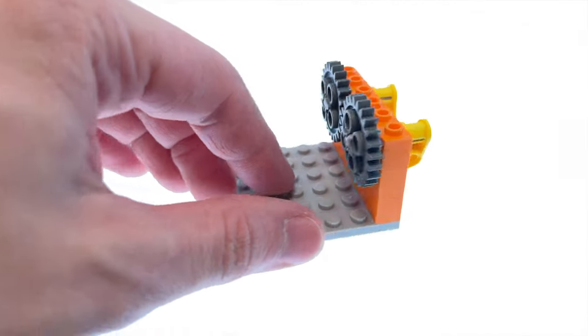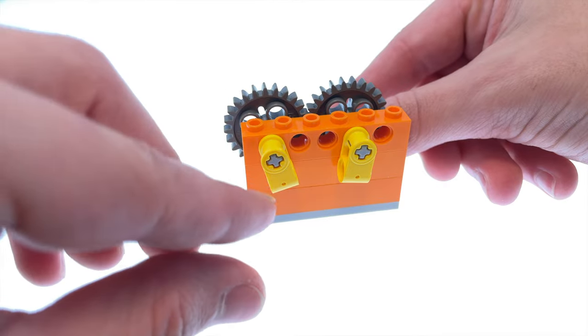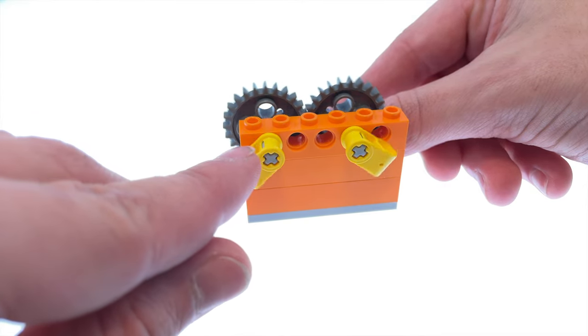You would expect exactly one turn on the second gear of a one-to-one gear ratio if you turn the first one only once, right? And yeah, that's exactly what we see here.